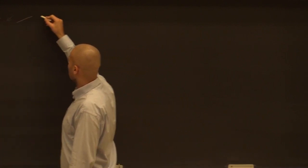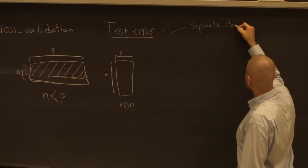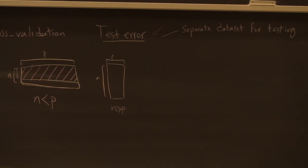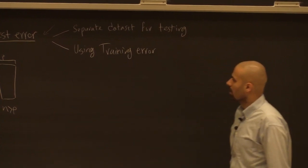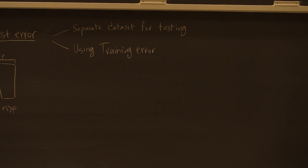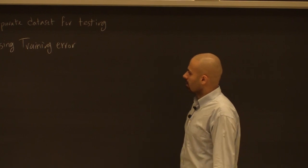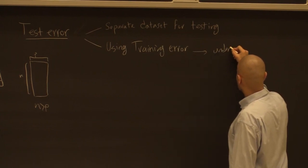The first idea is a separate dataset for testing — attractive because it's simple and it works, but only when we have sufficient data. The second idea is using training error. The issue is that training error is not a good approximation of test error, because it's cheating — we're measuring performance on data the algorithm has already seen. If it has overfit or memorized the data, it gives good performance while the actual test error will be higher. Training error underestimates test error.